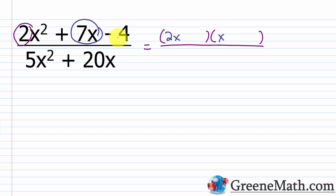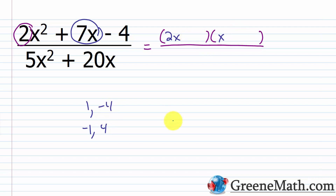To get 7x, I think about factors of negative 4: 1 and -4, or -1 and 4. I also have 2 and -2, but that won't work because placing ±2 in the binomials would create a common factor of 2, which doesn't exist here. So focusing on -1 and 4: putting 4 in one slot and -1 in the other gives 2x times 4 = 8x, and x times -1 = -x; 8x - x = 7x. So the numerator factors as (2x - 1)(x + 4).